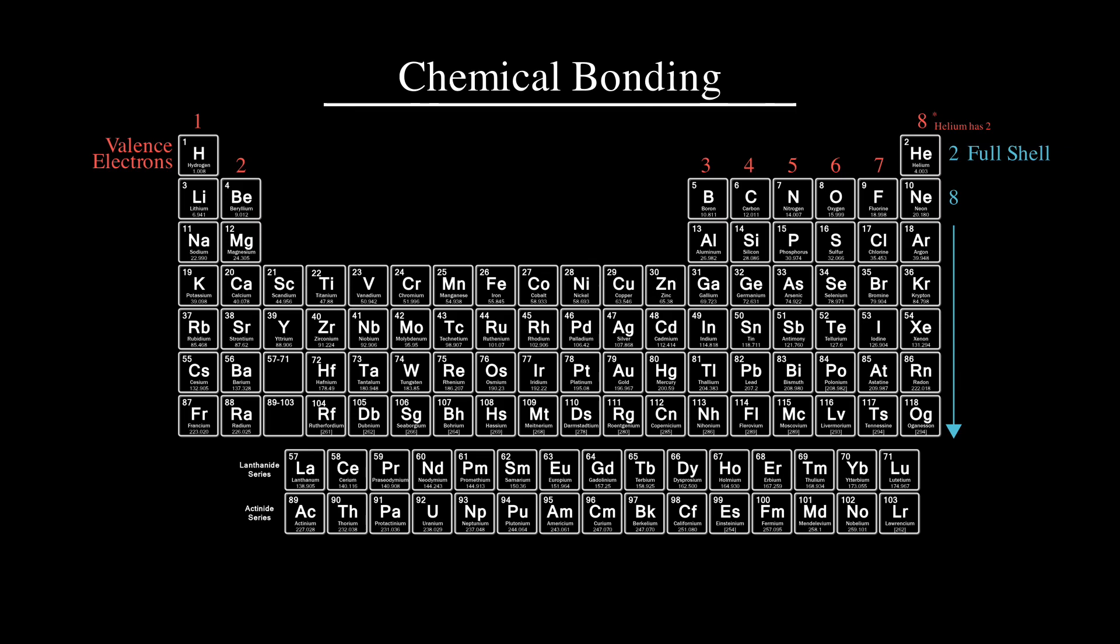Since we'll only deal with carbon and hydrogen, what you need to remember is that each carbon starts with four valence electrons and wants to end with eight, while hydrogen starts with one and wants to end with two.